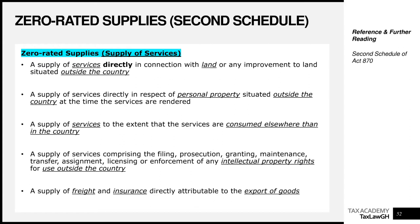The next is a supply of services comprising the filing, prosecution, granting, maintenance, transfer, assignment, licensing, or enforcement of any intellectual property rights for use outside Ghana. Any intellectual property rights in these forms, when they relate to use outside Ghana, are deemed services consumed outside Ghana, so we apply a VAT rate of 0%. Then, a supply of freight and insurance related to the export of goods also attracts a 0% rate, provided the export conditions regarding Commissioner General inspection and sampling are met.